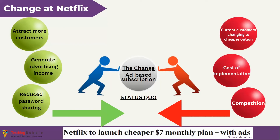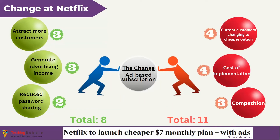After identifying these forces, we need to assign weightings to them — done here in a hypothetical manner. Attracting more customers and generating advertising income are each weighted a three, whereas the more significant restraining forces — current customers changing to the cheaper option and the cost of implementation — are weighted a four. This scenario suggests a challenging pathway for the change, because the total strength of the driving forces is eight, while the strength of the restraining forces is eleven. It's the overall weighting or strength of the forces, not the number of them, that's important.